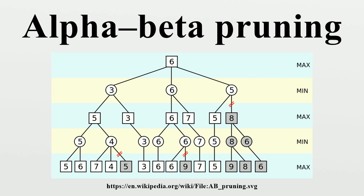The algorithm maintains two values, alpha and beta, which represent the maximum score that the maximizing player is assured of and the minimum score that the minimizing player is assured of, respectively. Initially, alpha is negative infinity and beta is positive infinity — both players start with their lowest possible score. It can happen that when choosing a certain branch of a certain node, the minimum score that the minimizing player is assured of becomes less than the maximum score that the maximizing player is assured of. If this is the case, the parent node should not choose this node, because it will make the score for the parent node worse.